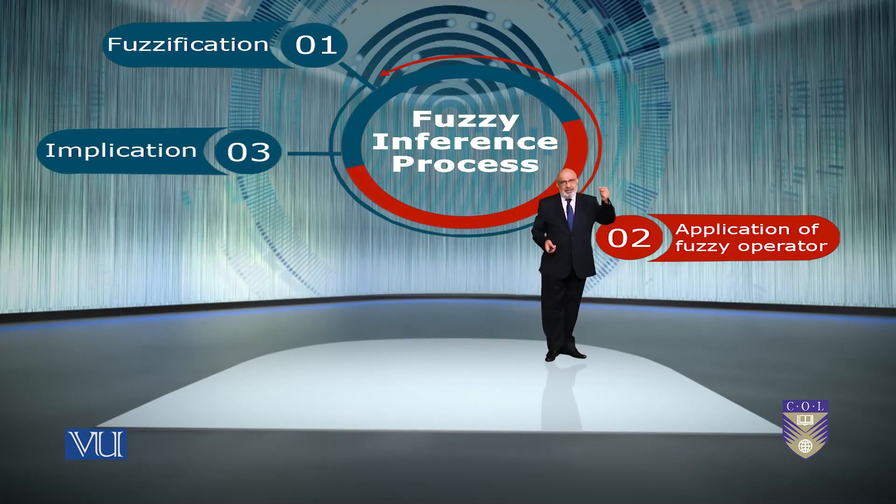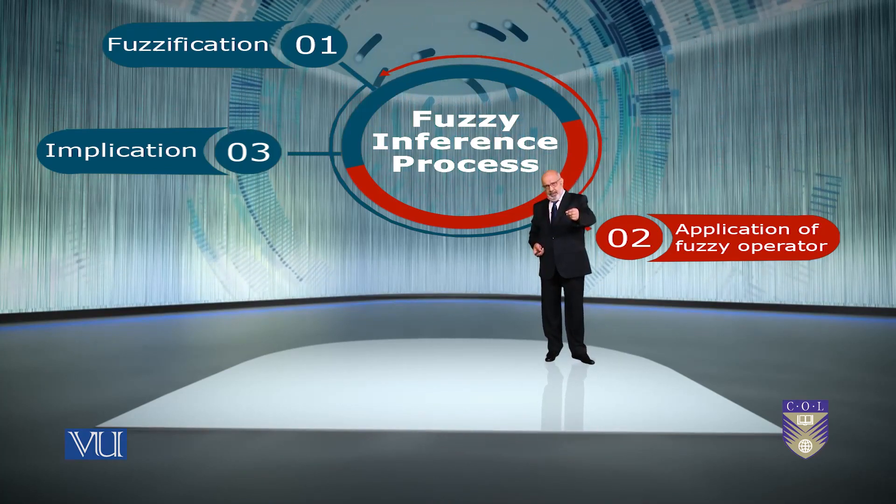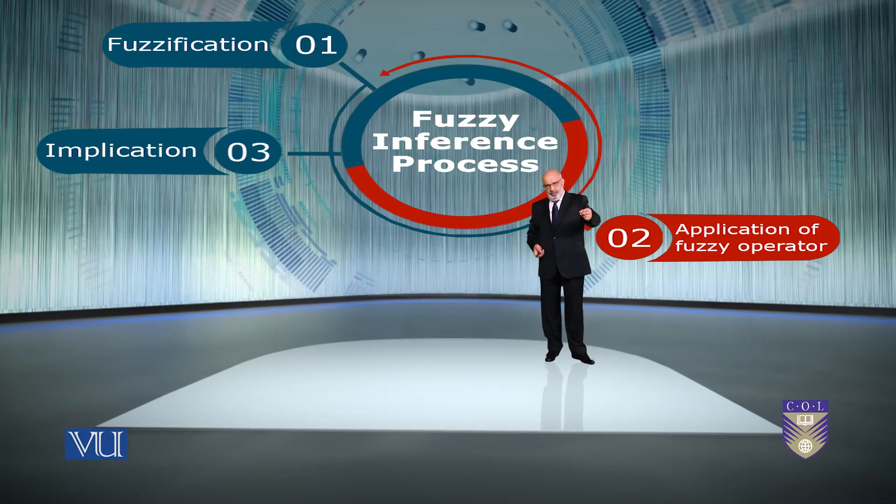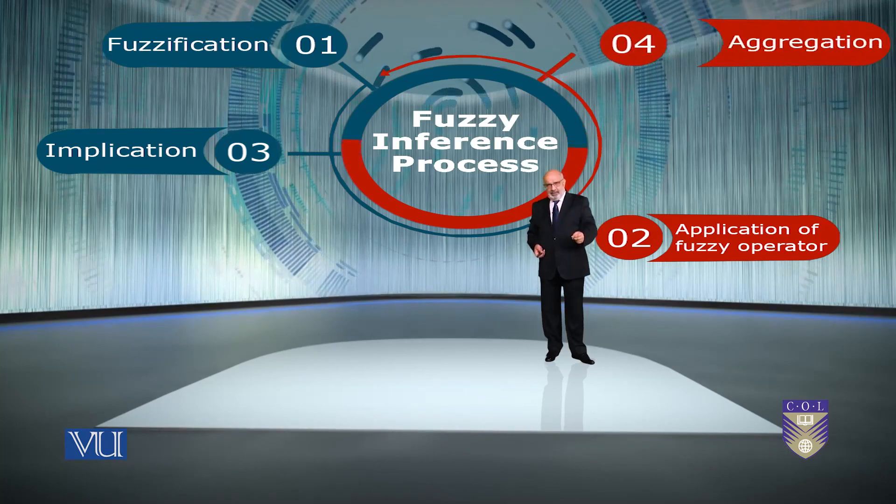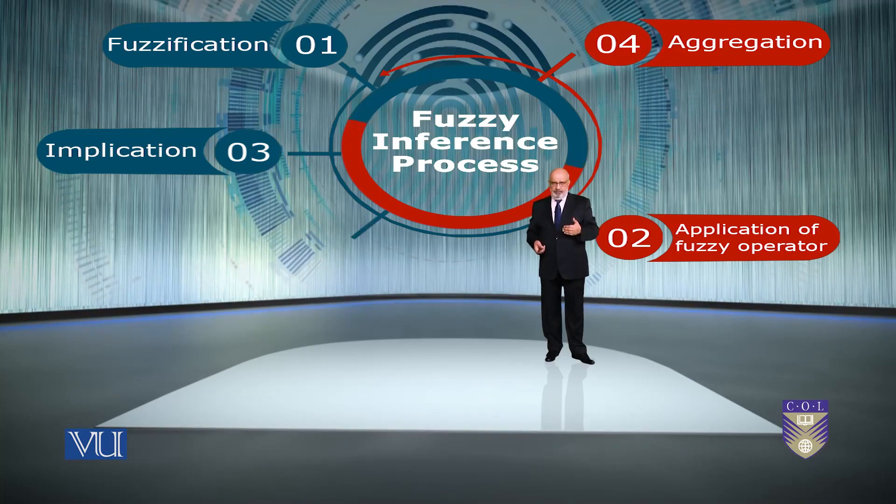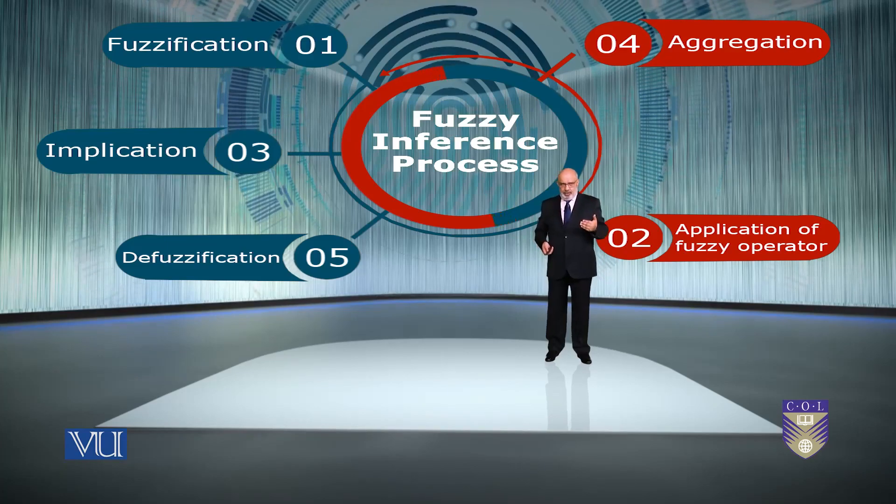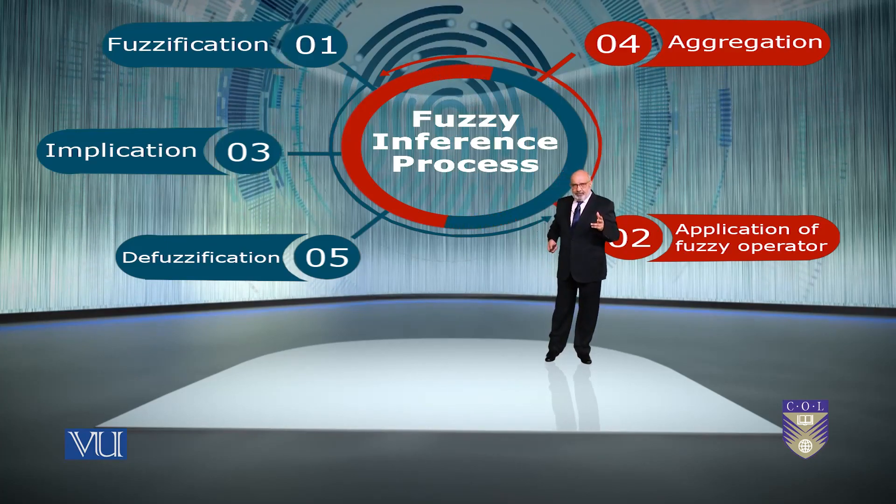Then implication. Implication is effectively the application of the rule. So from the antecedents to the consequent, then aggregation of consequences across the rule, if you have multiple ones. And then of course, defuzzify. So you come up with a crisp output. So five steps.